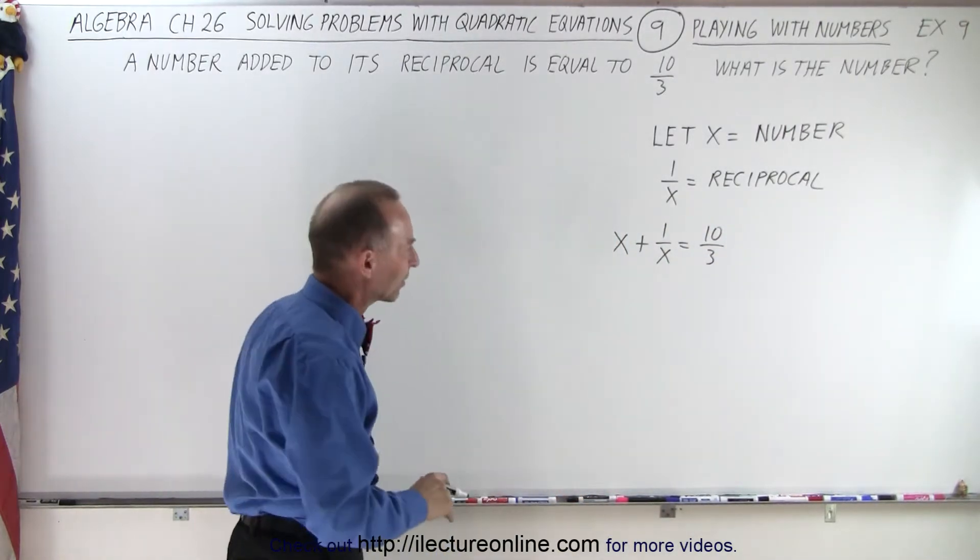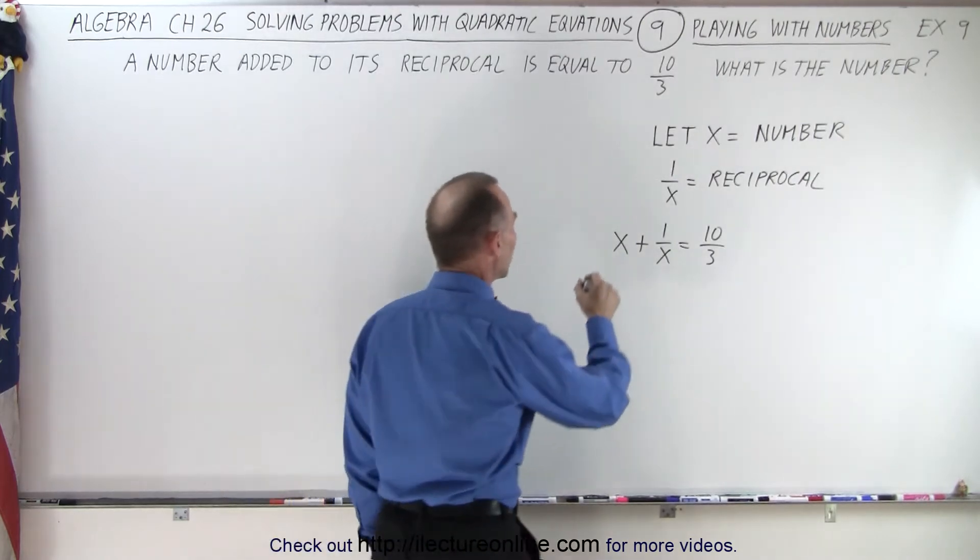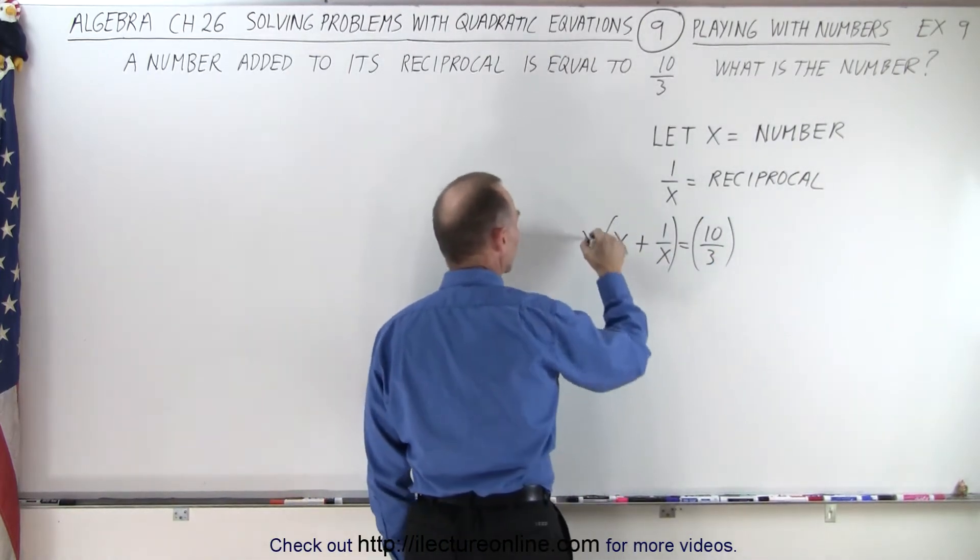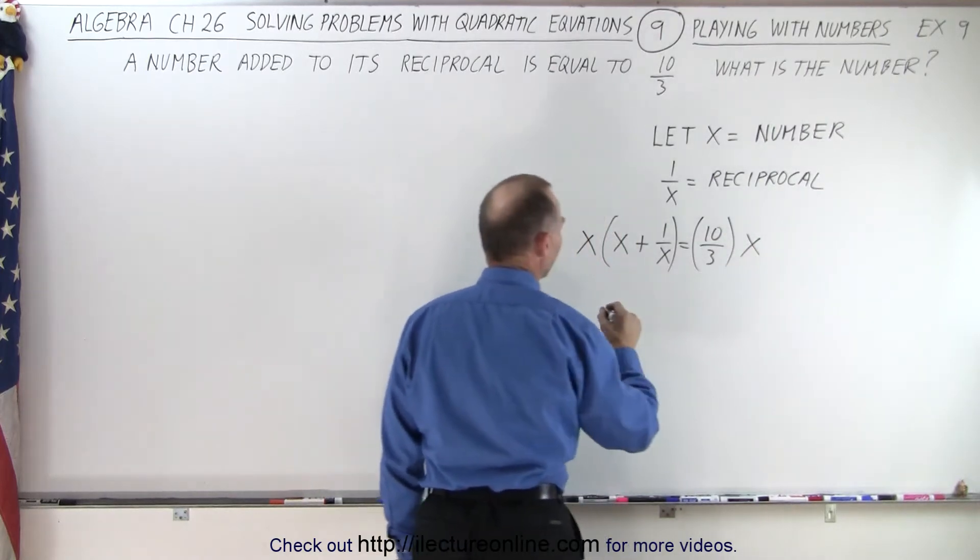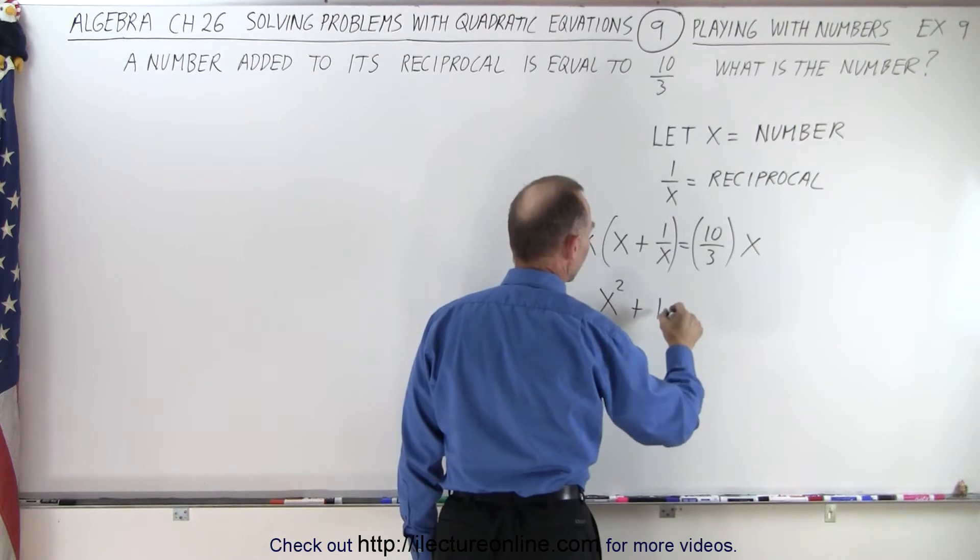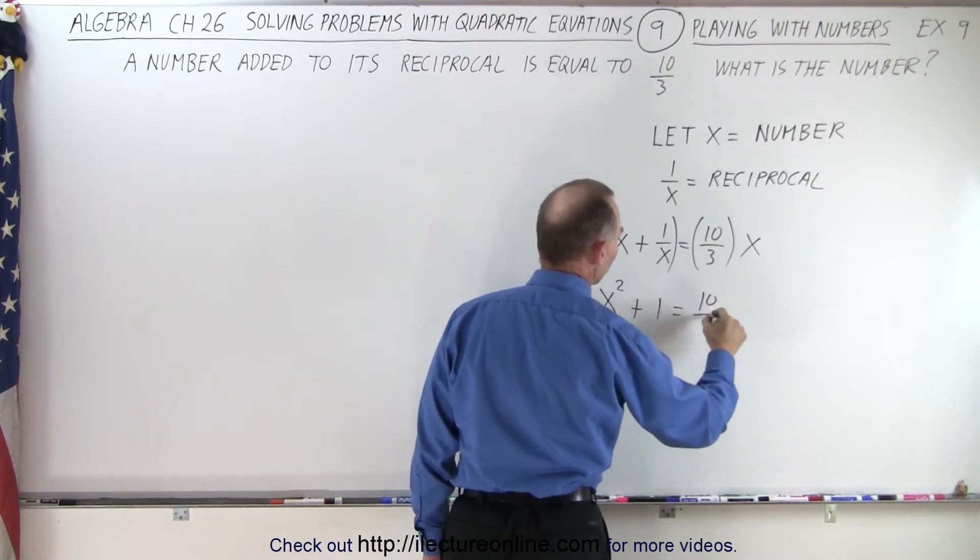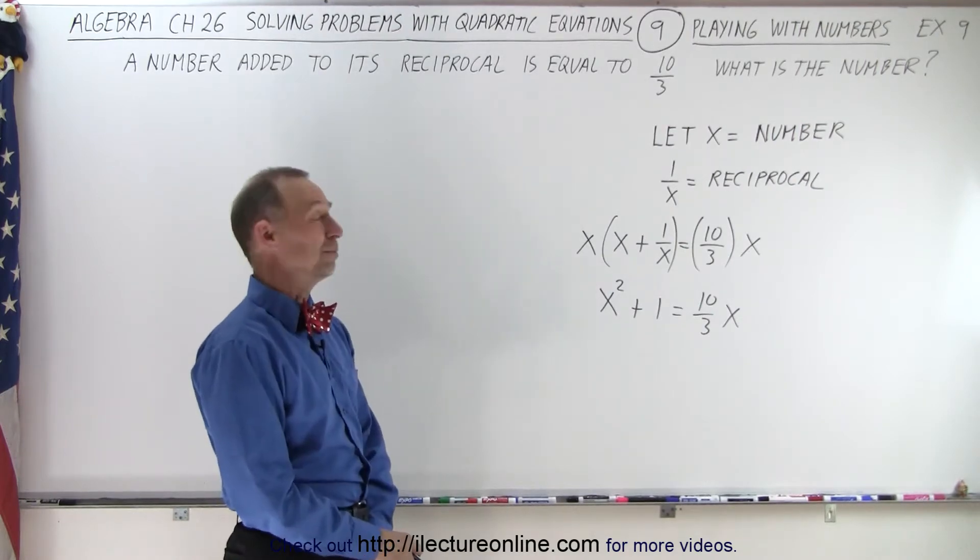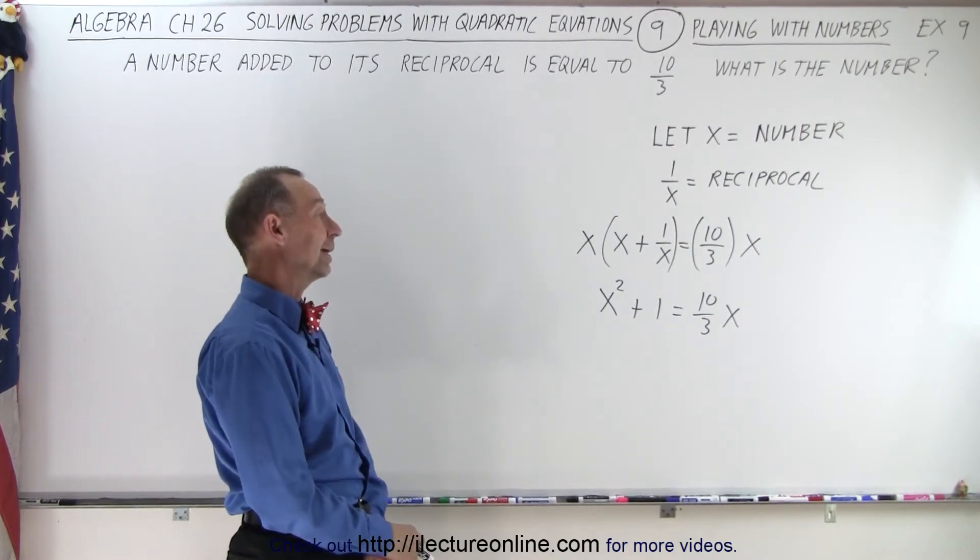And so we're going to solve that for x. To do that, we're going to multiply both sides of the equation by the lowest common denominator, which is x. So in this case, we end up with x squared plus 1 over x times x is 1 equals 10 over 3x. All right. Well, actually, I didn't multiply times the lowest common denominator, did I? Actually, I should have multiplied times 3x to get rid of the 3 as well.